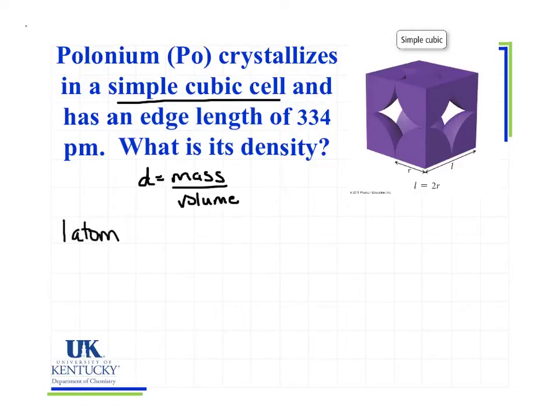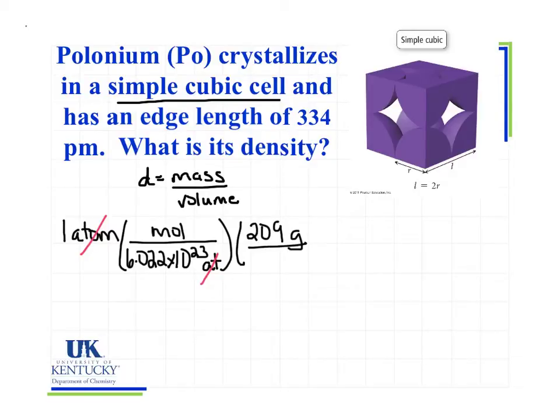Because my cubic unit cell has eight corner atoms, each of which counts one eighth towards that unit cell. So I have a total of one atom. Now I can use Avogadro's number 6.022 times 10 to the 23rd atoms per mole. Atoms cancel with atoms. And then I have my moles to grams because I know the molar mass of polonium is 209 grams per mole.